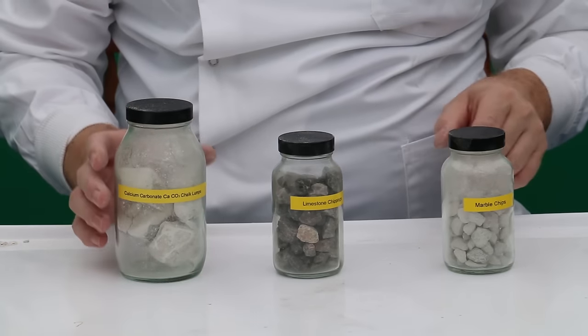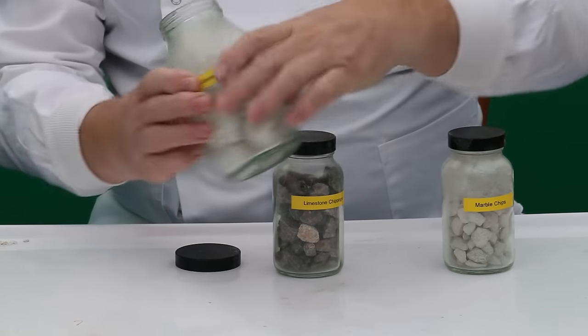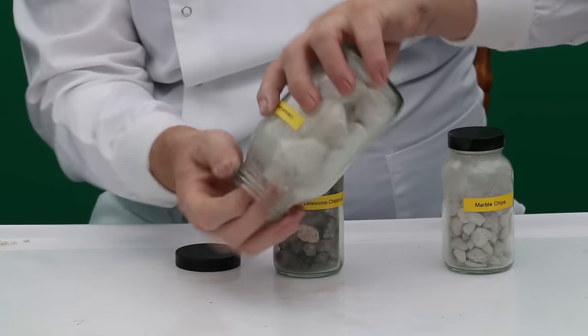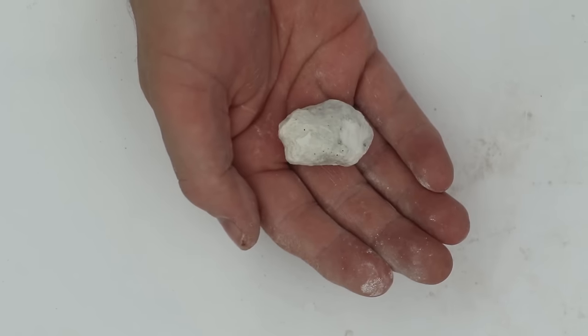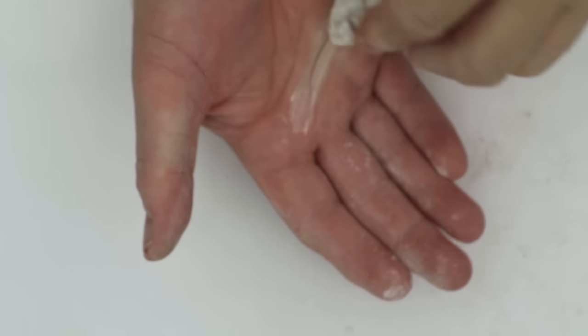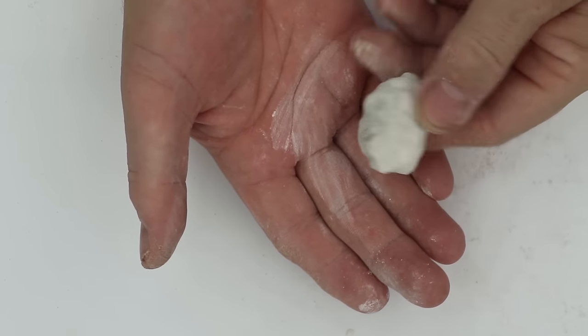Let's have a look at some of these substances. Here we have some chalk, some little pieces, and that's a slightly bigger piece of chalk. It's a white crumbly sort of material.